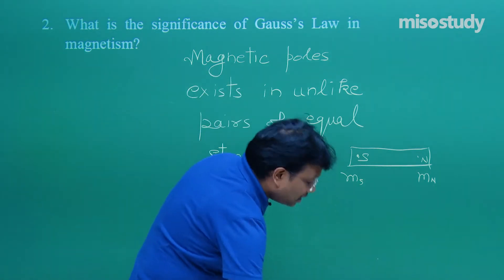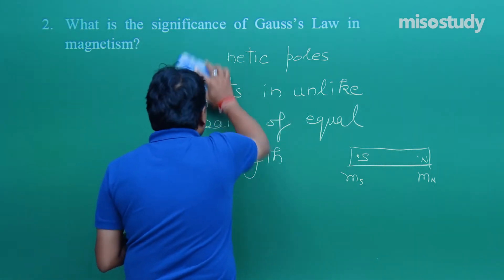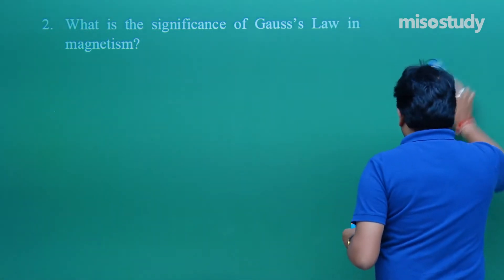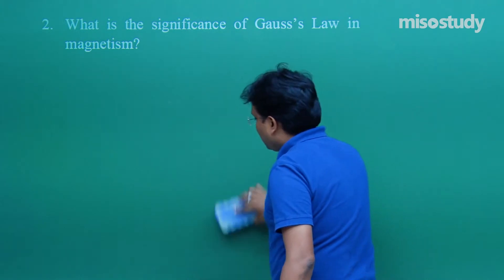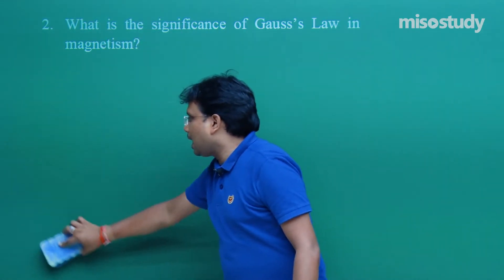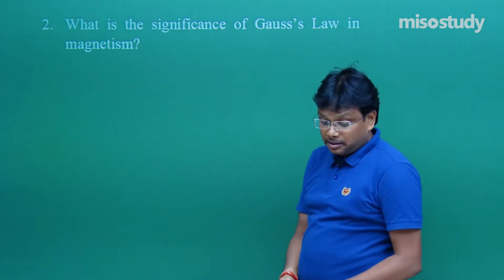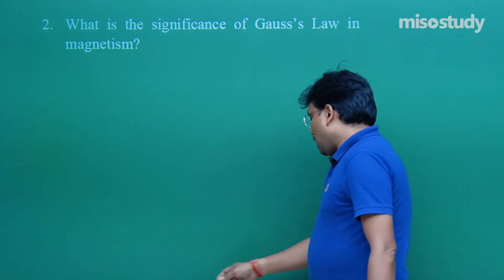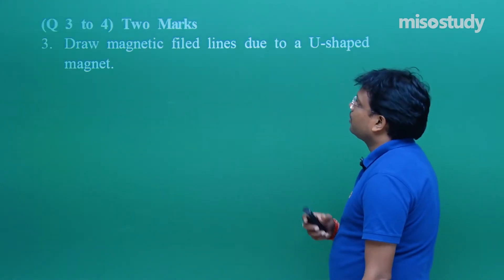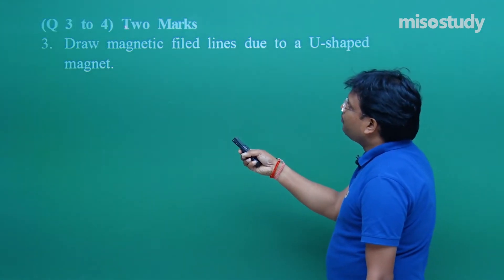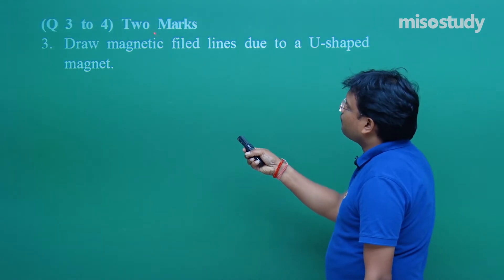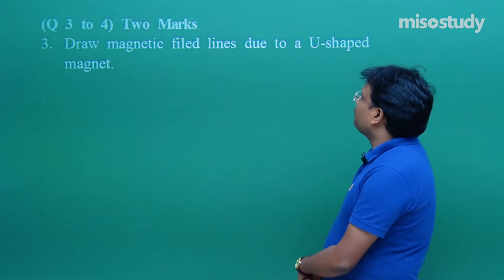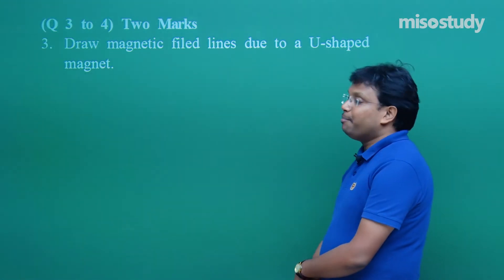CBSE teachers do not like to deduct unnecessary marks. If a student mentions anything that is not absurd, the student will get complete marks. Now let us move on to questions number 3 and 4, each for 2 marks. Be careful. The question is: draw magnetic field lines due to a U-shaped magnet.